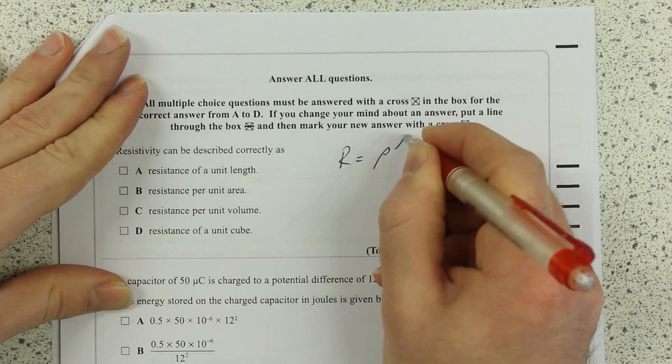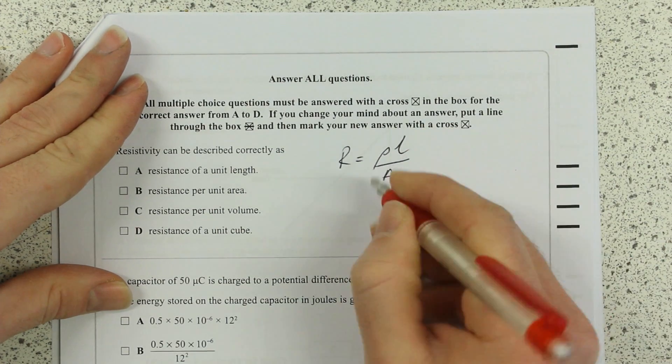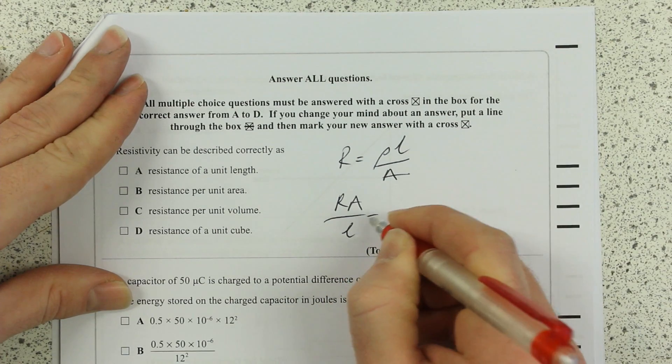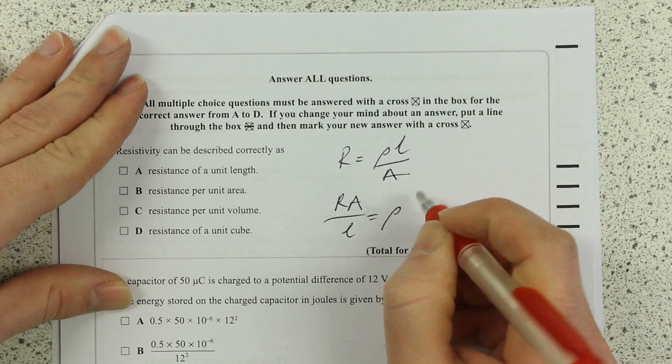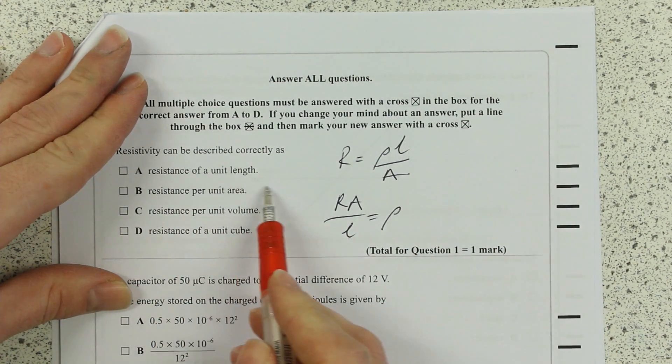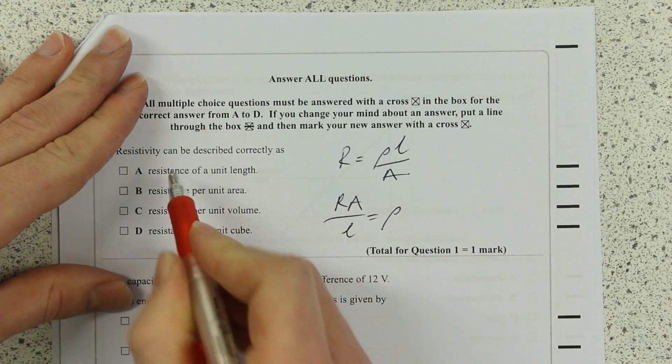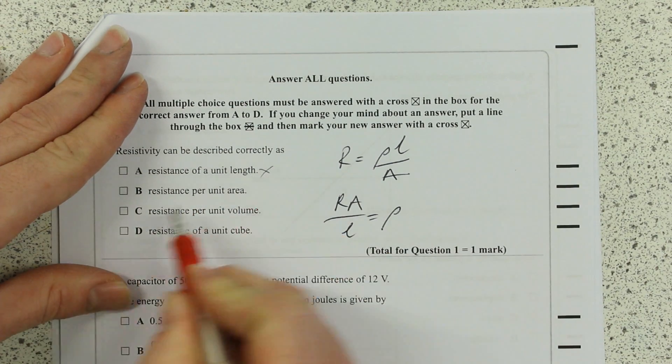Then you think, well it's not going to be resistance per unit length because there's area in there, so it can't be that. Can't be this one because there's length in there, not just area.